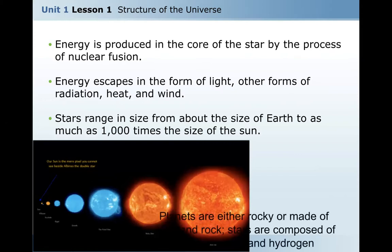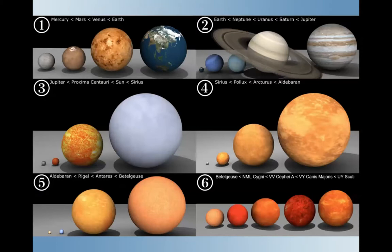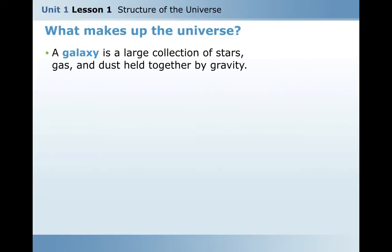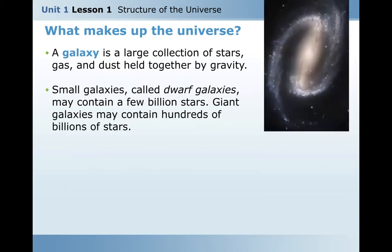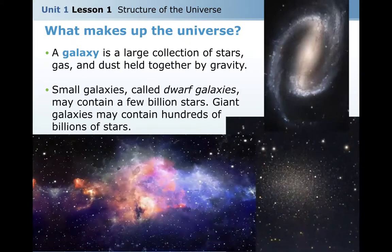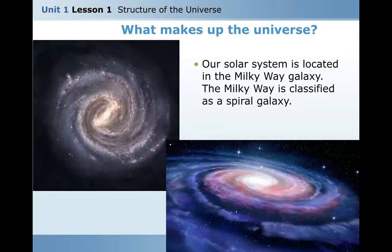Planets are either rocky or made of gas. Stars are composed mainly of helium and hydrogen gases. A galaxy is a large collection of stars, gas, and dust held together by the tremendous force of gravity. Small galaxies called dwarf galaxies may contain a few billion stars, while giant galaxies may contain hundreds of billions of stars. Our solar system is located in the Milky Way galaxy, which is classified as a spiral galaxy.